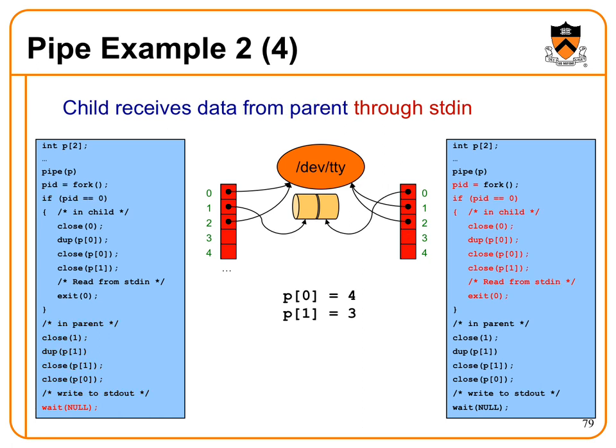The child again does the opposite. It closes 0 to disconnect from the TTY on standard in. It dups p0 to reconnect file descriptor 0 to the same thing file descriptor 4 points to, the reading half of the pipe. And finally, it closes p1 to disassociate file descriptor 3 from the writing half of the pipe. Now the parent can write to standard out, the child can read from standard in, and those are connected. If we had one more week of class, we would probably be making the pipeline part of the shell assignment, but trust me, it's big enough as it is.